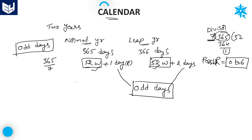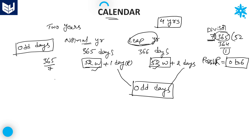Now, a few more important points in calendars. As we are talking about leap year — what is a leap year and how can we identify whether a particular year is a leap year or not? Basically, we know that every leap year comes after 4 years.